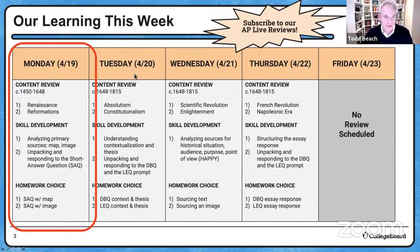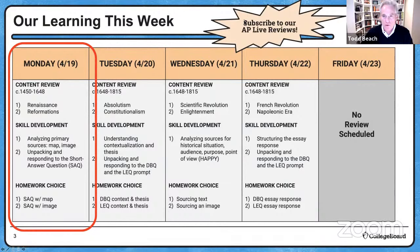Looking at the rest of the week: Tuesday we have absolutism and constitutionalism, Wednesday is Scientific Revolution and Enlightenment, and Thursday is French Revolution and Napoleonic era. The homework choices offer different types of questions to get at the different ways you'll be assessed on the AP exam. Please also try to subscribe to our AP Live reviews, and like us if you're enjoying it.